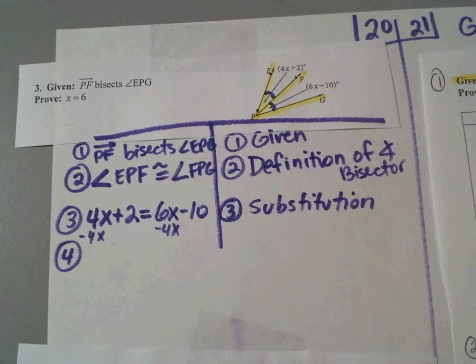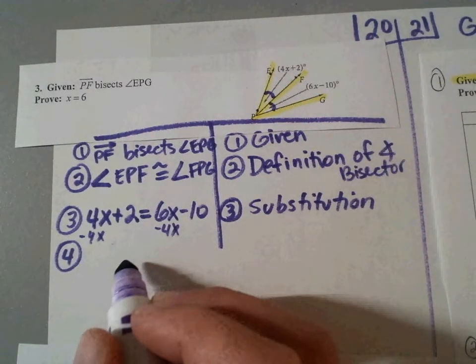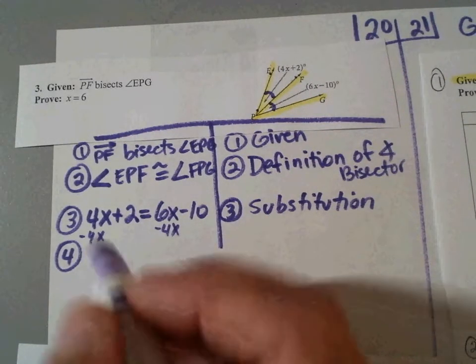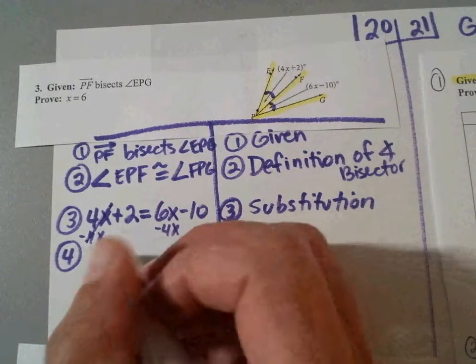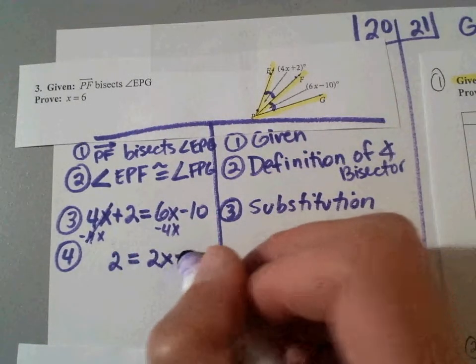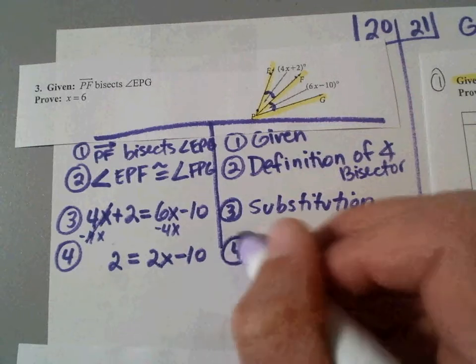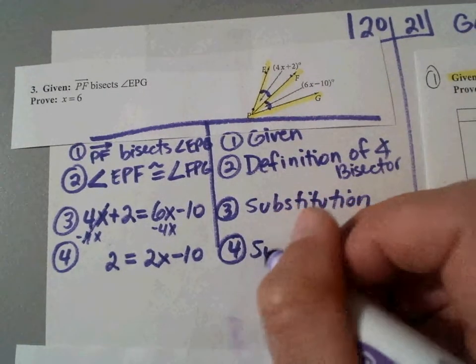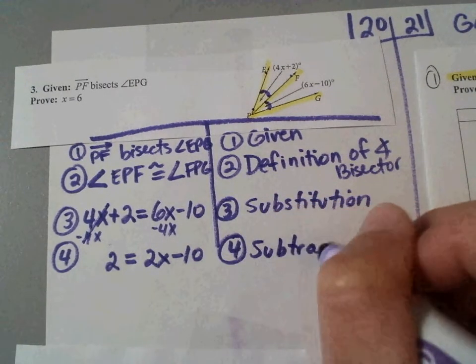And write that small. So line 4 is what you get after you subtract 4X from both sides. So this and this would cancel. What are you left with? 2 equals 2X minus 10. So step number 4. To get that, you did subtraction.